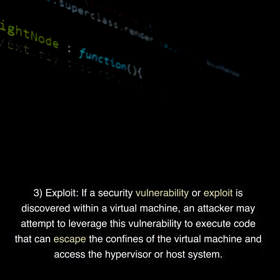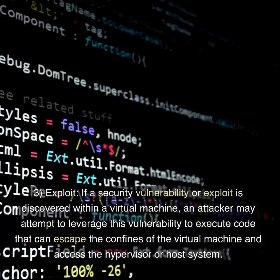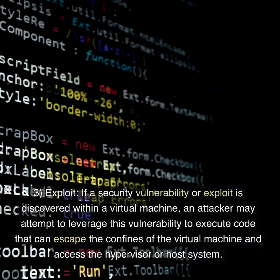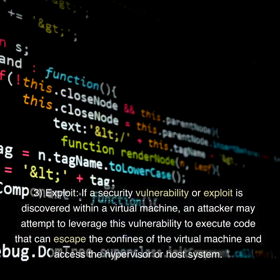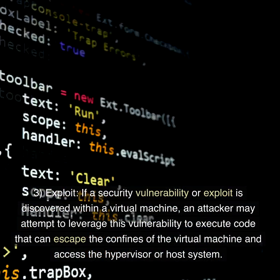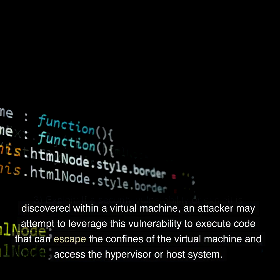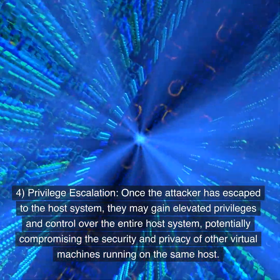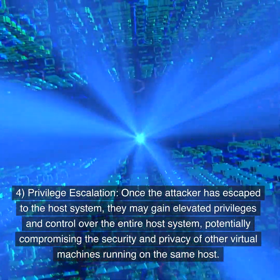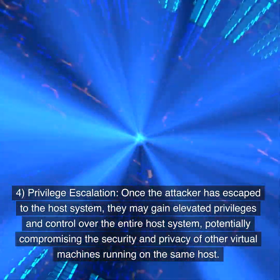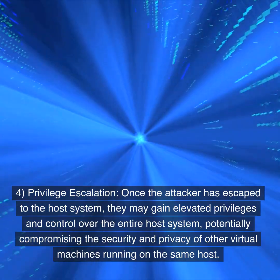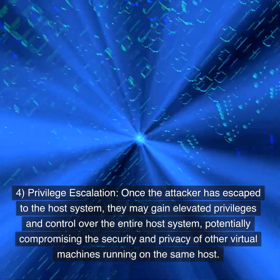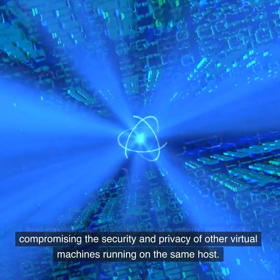3. Exploit: If a security vulnerability or exploit is discovered within a virtual machine, an attacker may attempt to leverage this vulnerability to execute code that can escape the confines of the virtual machine and access the hypervisor or host system. 4. Privilege escalation: Once the attacker has escaped to the host system, they may gain elevated privileges and control over the entire host system, potentially compromising the security and privacy of other virtual machines running on the same host.